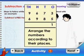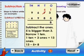Arrange the numbers according to their places. Subtract the ones. 5 is bigger than 3. Borrow 1 ten. 1 ten plus 3 ones is equal to 13 ones. 13 minus 5 is equal to 8.